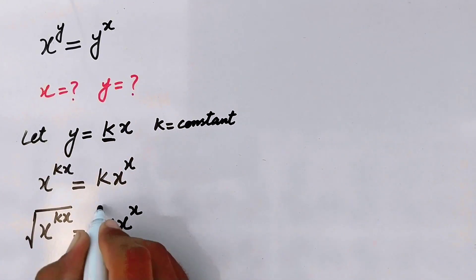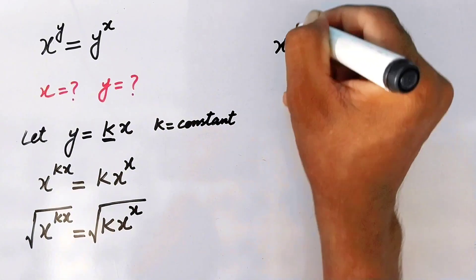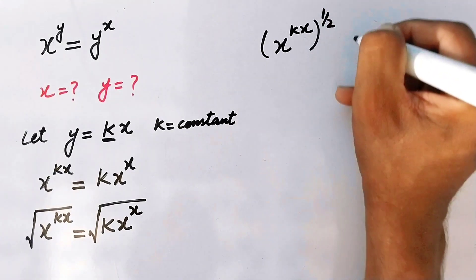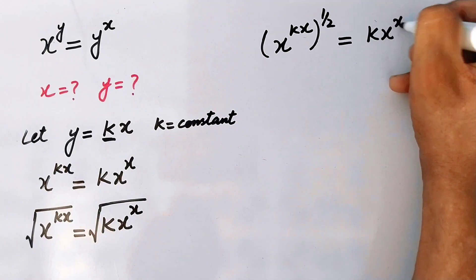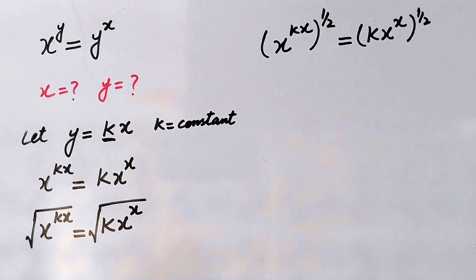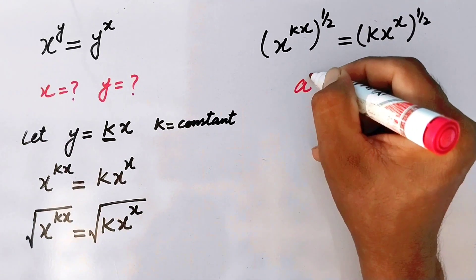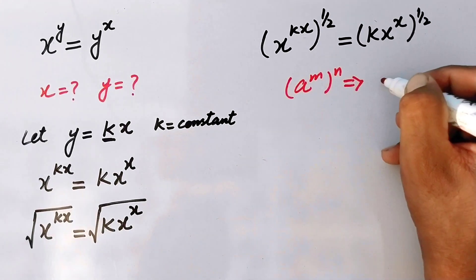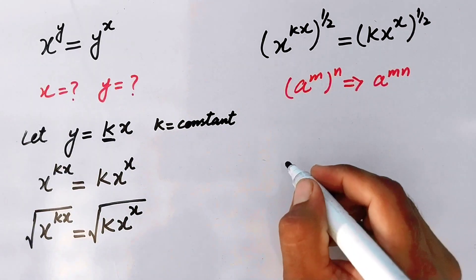We can write the square root the same as raising to the power 1 over 2. So x power kx to the power 1 over 2 is equal to kx power x to the power 1 over 2. Now here we will use the exponential formula: a power m, power n can be written as a power m times n.